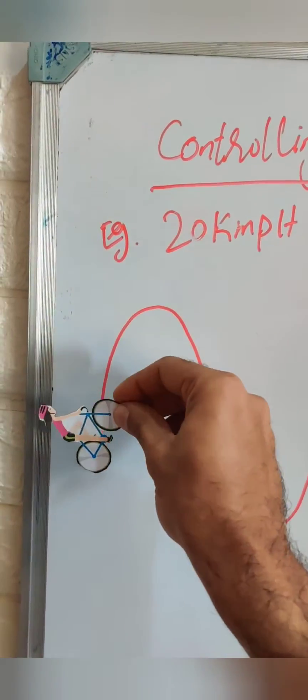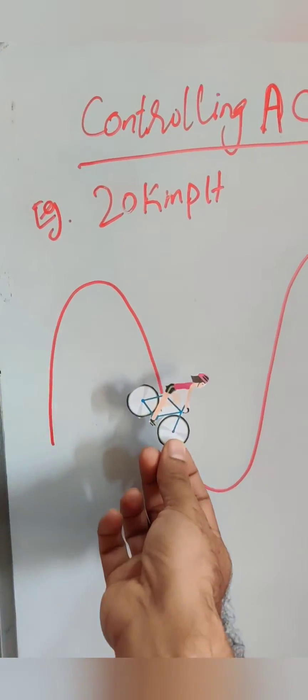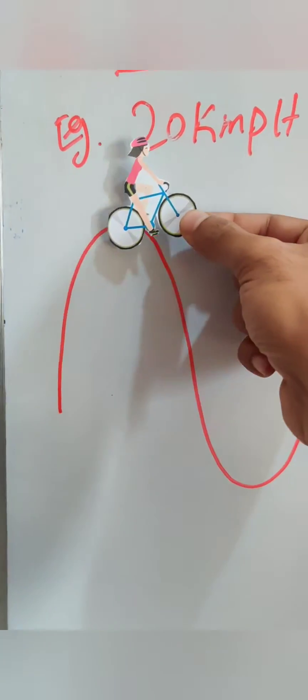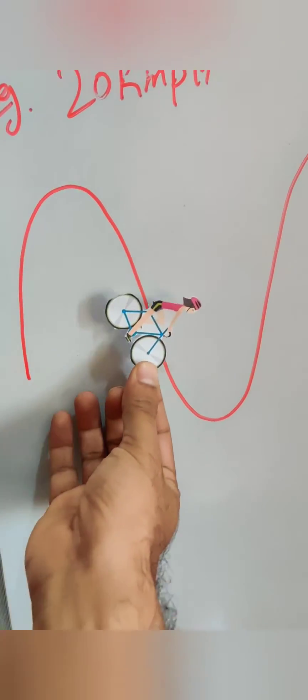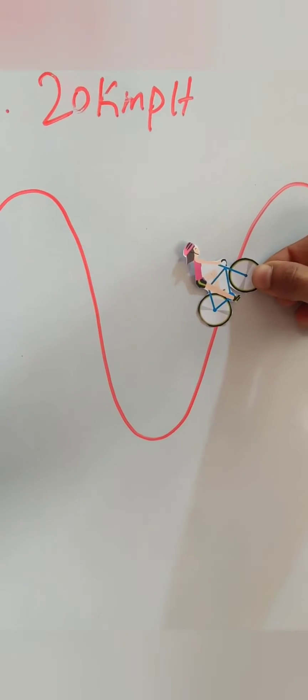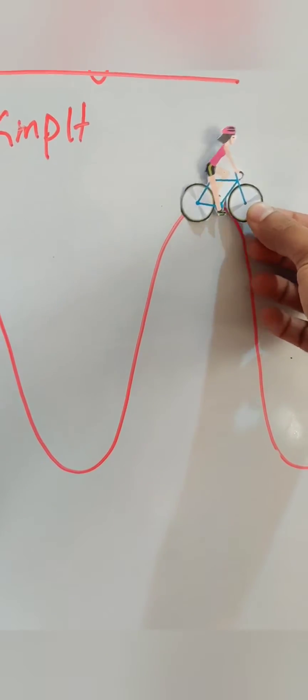So let's assume that the same bicycle you are riding on a sine wave pattern which has a lot of ups and downs. So now imagine how can you maintain a constant 20 km per hour because at each point the dynamics are too different and the set point values keep changing.